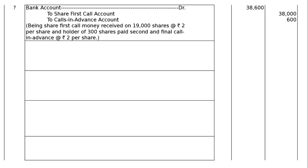To share first call account: 19,000 into 2 = Rs. 38,000. To calls in advance account: a holder of 300 shares paid second and final call in advance — 300 shares at the rate of Rs. 2 = Rs. 600. Calls in advance account credited Rs. 600. These two credits: Rs. 38,000 plus Rs. 600 — written in debit as Rs. 38,600. Narration: being share first call money received on 19,000 shares at the rate of Rs. 2 per share, and holder of 300 shares paid second and final call in advance at the rate of Rs. 2 per share.